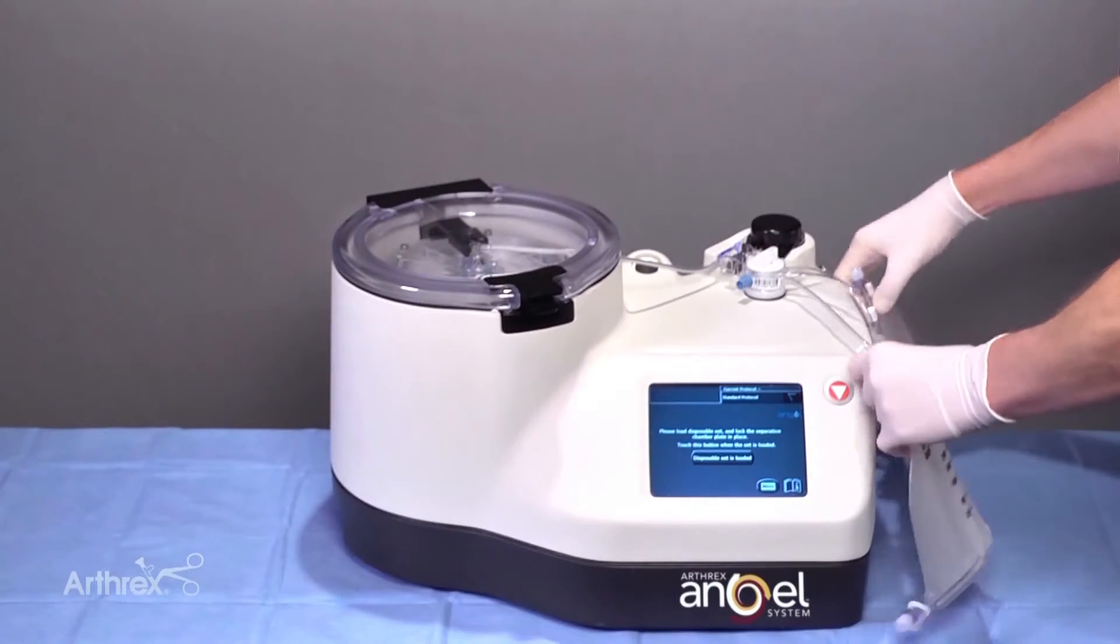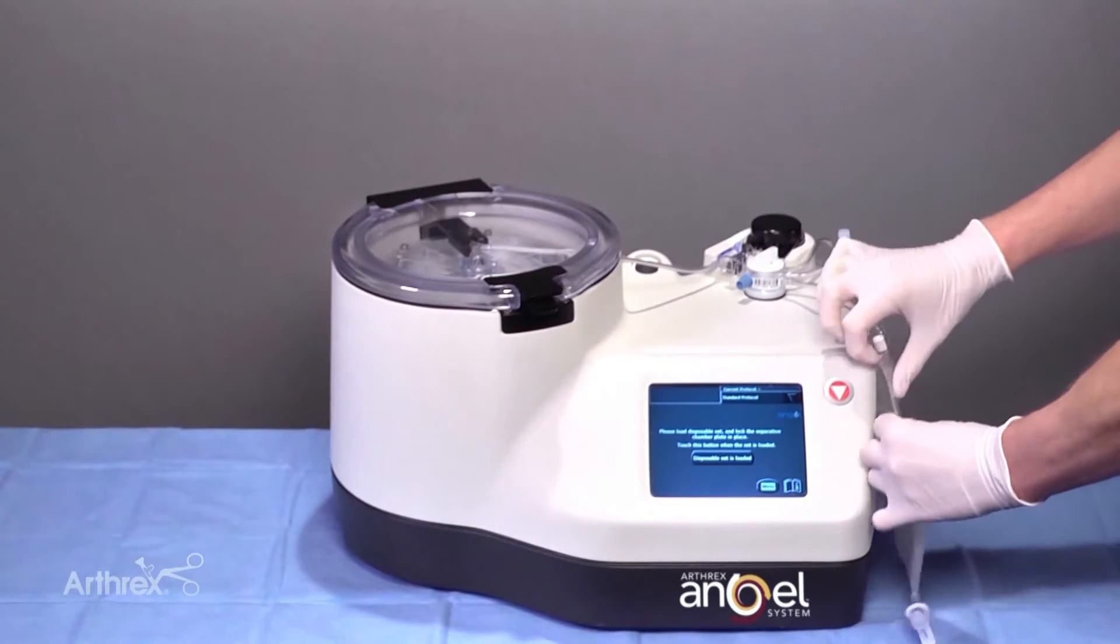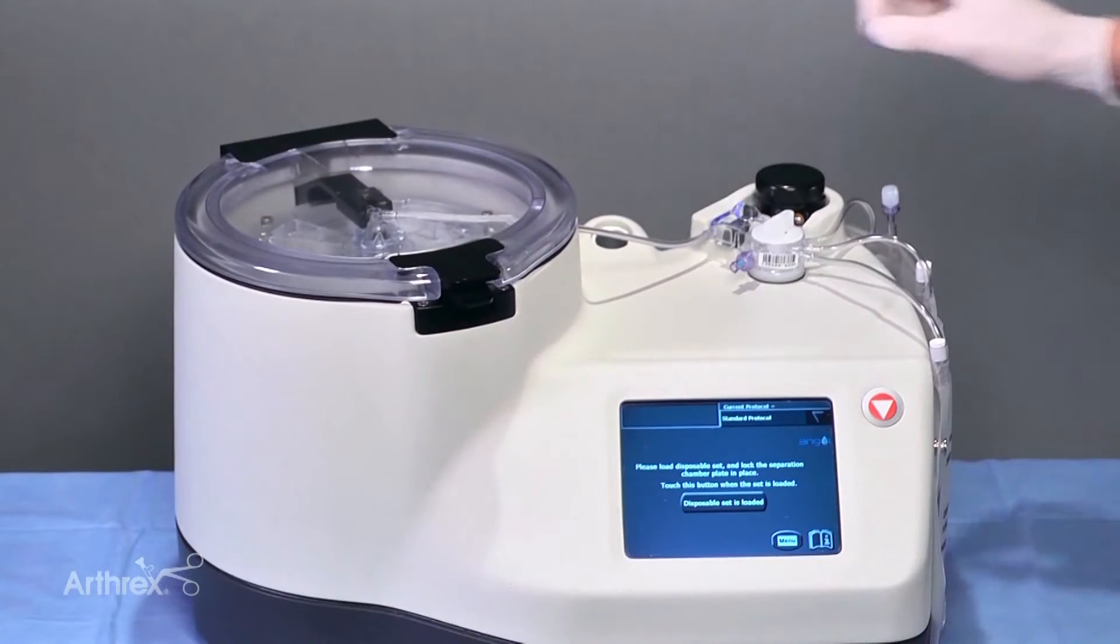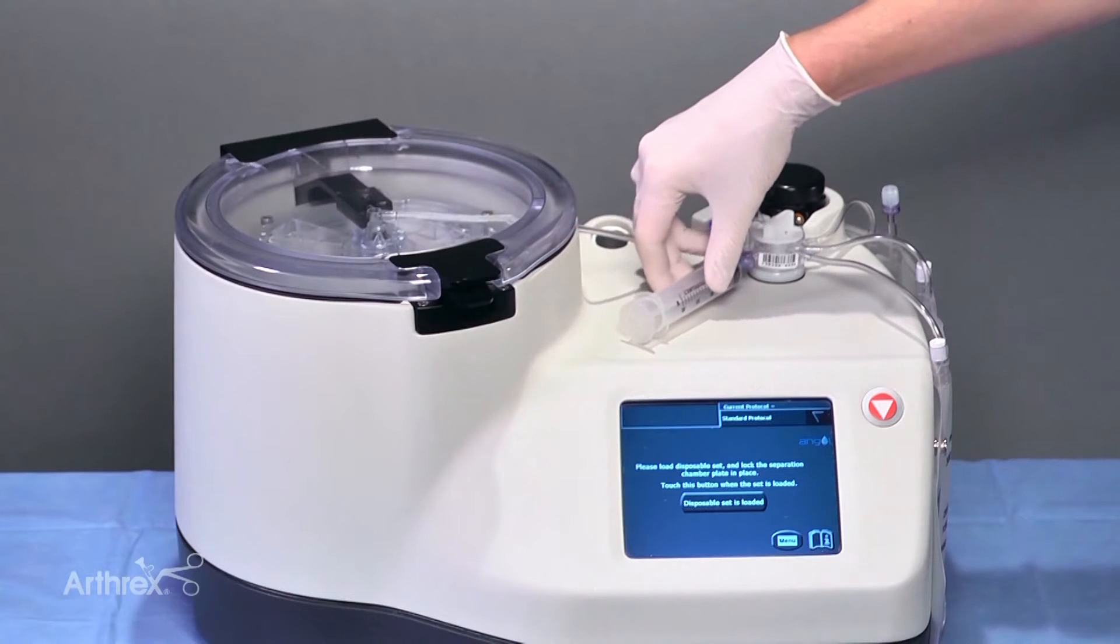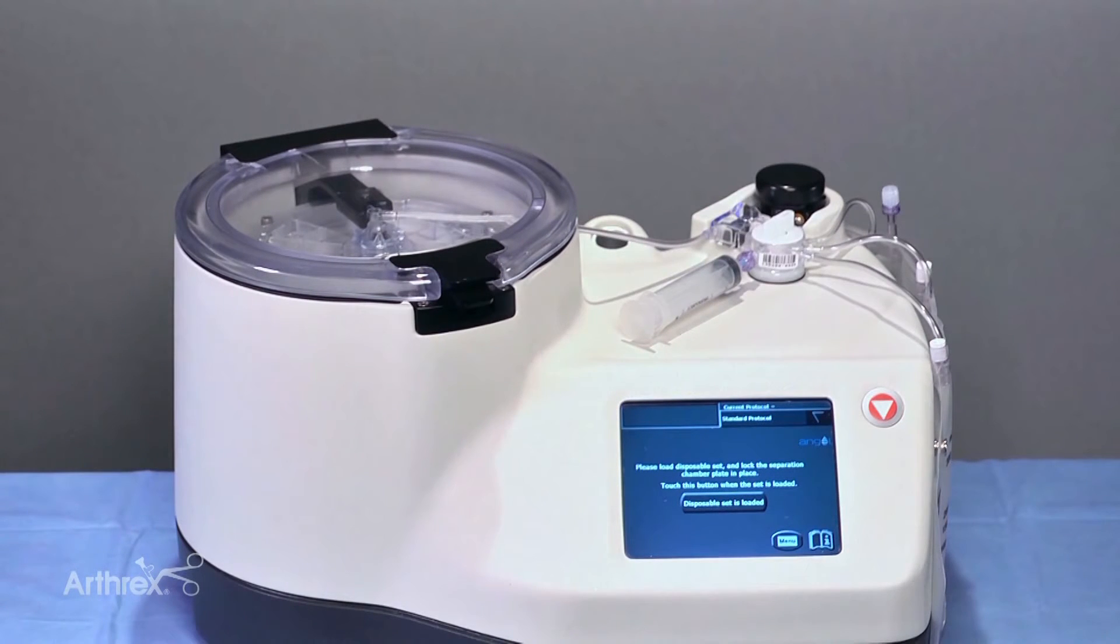Hang the three compartment reservoir bag on the two support pins located on the side of the Angel machine. Attach the PRP collection syringe to the PRP valve port. The Arthrix Angel system is now ready to use.